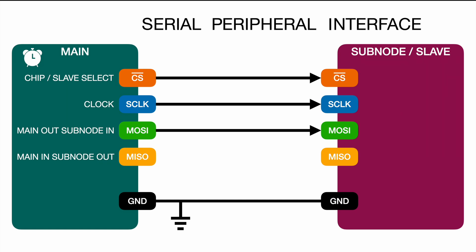Vice versa on MISO — Main In Subnode Out. In this case the subnode outputs and the main inputs, so the subnode is sending data to the main. This could be, for example, an ID read from an RFID card and sent back to the main module, such as a Raspberry Pi.